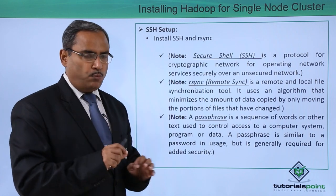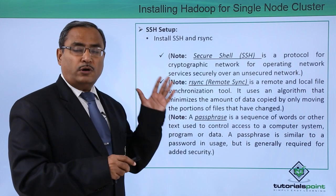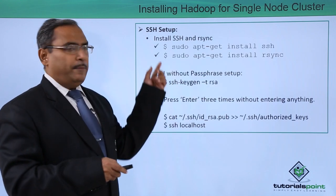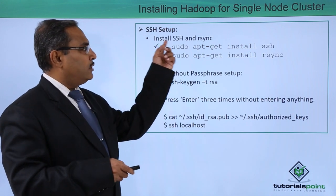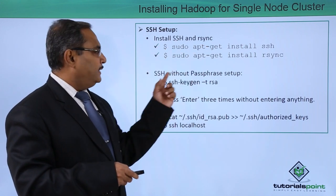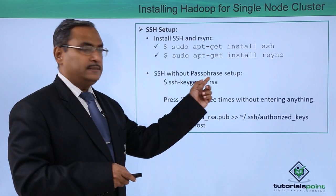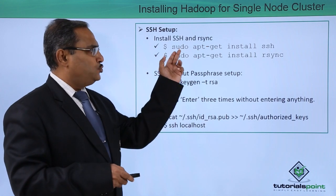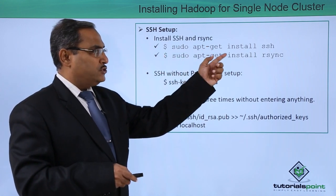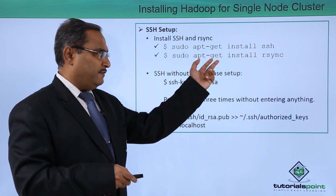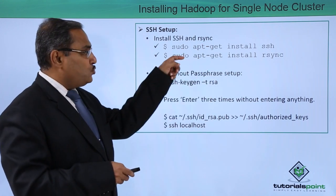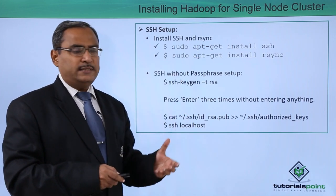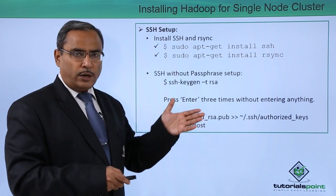Now let us go step by step for the installation of Hadoop for a single node cluster. First, install SSH and RSync. To do this, issue two commands: 'sudo apt-get install ssh' and then 'sudo apt-get install rsync'. These two commands are to be executed from the dollar prompt to install SSH and RSync on our system.